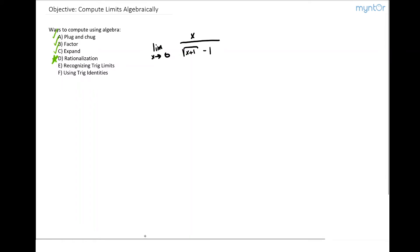What we can do by rationalization is multiply the top and bottom by the same expression. Here, I'm going to multiply the bottom by the square root of x plus one plus one, and I'll multiply the top by that same expression.